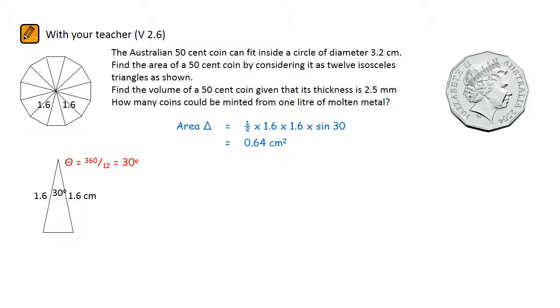To work out the area of the whole coin, of course we have to multiply it by 12. So the area of a coin works out to be 7.68 cm². The question also asks us to work out the coin's volume.